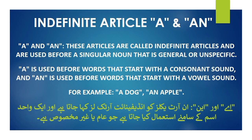Indefinite article A and AN. These articles are called indefinite articles and are used before a singular noun that is general or unspecific. A is used before a word that starts with a consonant sound, and AN is used before a word that starts with a vowel sound.